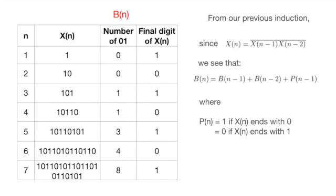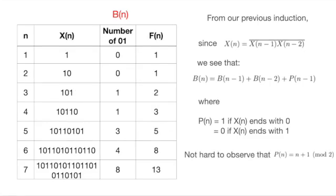This allows us to write the relationship B(n) equals B(n-1) plus B(n-2) plus P(n-1), where P(n) equals 1 if X(n) ends with 0 and equals 0 otherwise. Due to our inductive proof before, it is not hard to see that X(n) ends in 0 and 1 alternately, or P(n) equals (n-1) modulo 2.